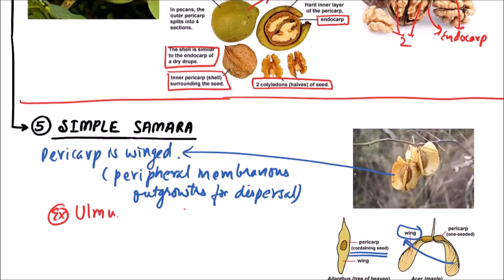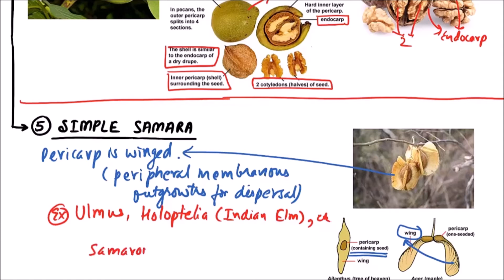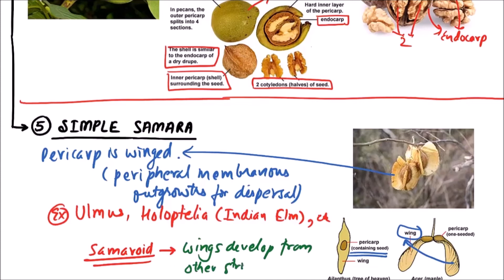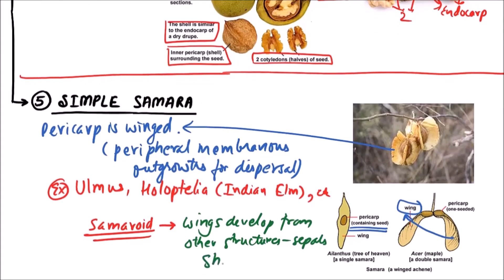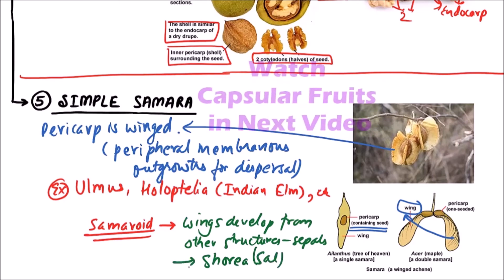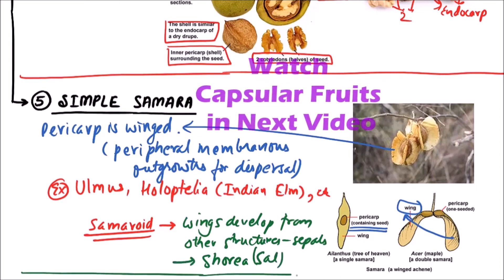Examples of simple samara include Ulmus and Holoptelea, also known as Indian elm, etc. It's important that if the term 'samaroid' is used, it means that the wings develop from other structures like sepals, as in the case of Shorea, i.e., sal. Another example is maple.